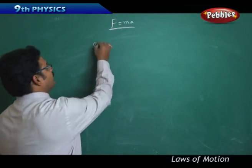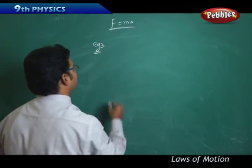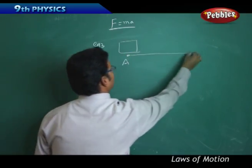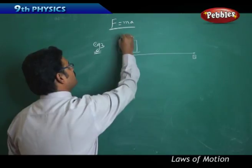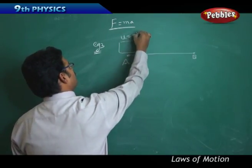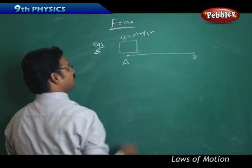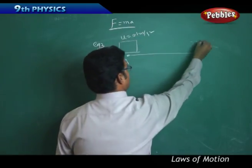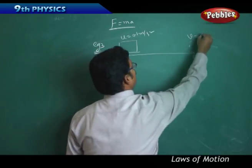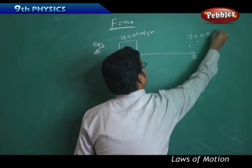Next example: There is a block which is at point A and it started its journey with initial velocity U = 0.1 meters per second, and it gains final velocity V = 0.5 meters per second in time t = 3 seconds.